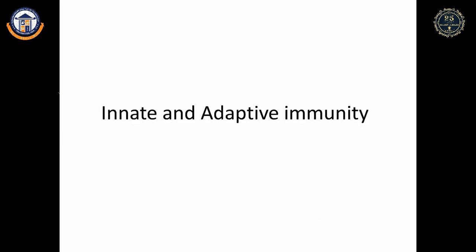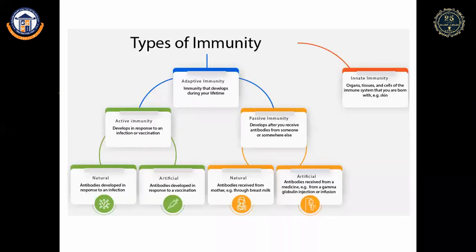In passive immunity, when we are born we receive certain antibodies through breastfeeding from our mother — that is natural passive immunity. In artificial passive immunity, you are directly inoculated with antibodies. In artificial active immunity, vaccination is provided so the body produces its own antibodies.